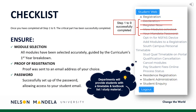Please pay careful attention to this checklist to ensure you have completed all important steps of this process: accurate module selection for your first year, proof of registration emailed to an address of your choice, and your password having been created or obtained.